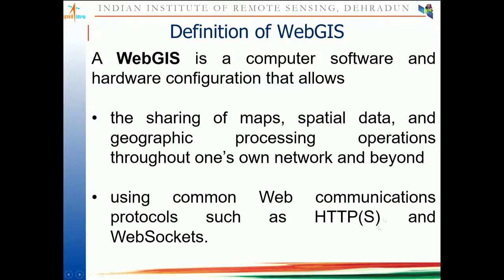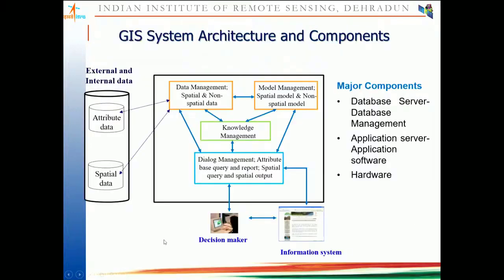HTTP is the most popular protocol; HTTPS is the secured version. All modern browsers follow HTTPS. WebSockets are used when two-way continuous communication is needed — for example, a live map chat application where users are continuously making requests and responses happen in near real-time. The GIS system has major components: the database server for database management, the application server with application software, and the hardware.